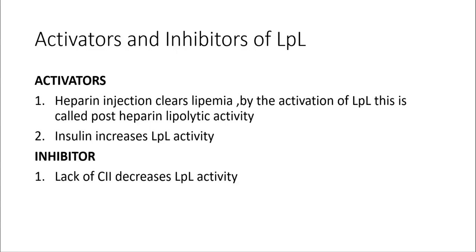The activators and inhibitors of lipoprotein lipase: activators include heparin injection, which clears lipemia — chylomicron accumulation in the blood after a lipid-rich meal — this is known as post-heparin lipolytic activity. Insulin, a hormone that reduces blood glucose level, also increases LPL activity. One inhibitor is lack of ApoC2; since ApoC2 is the main activator of LPL, lack of ApoC2 decreases LPL activity.